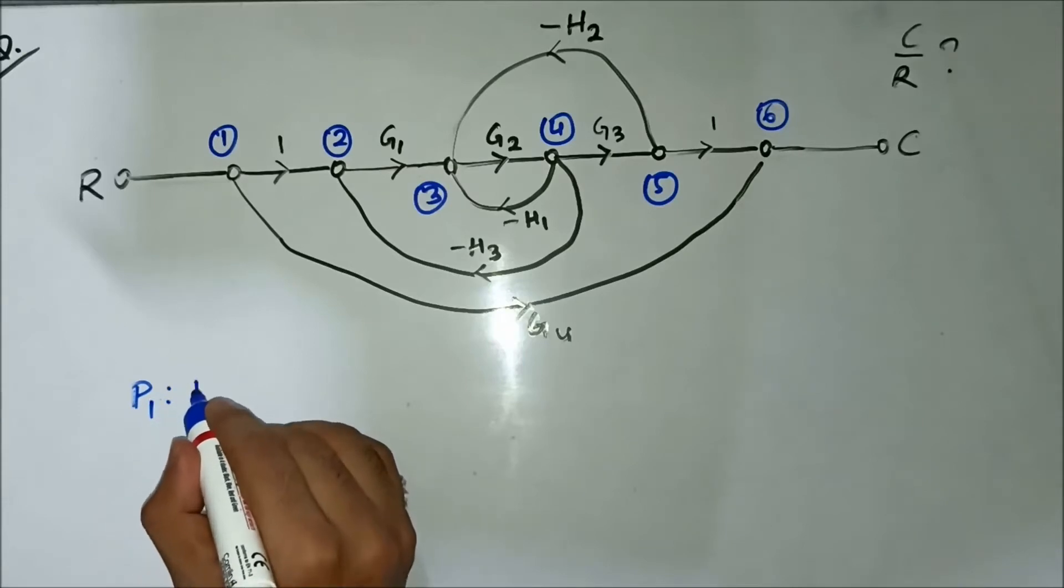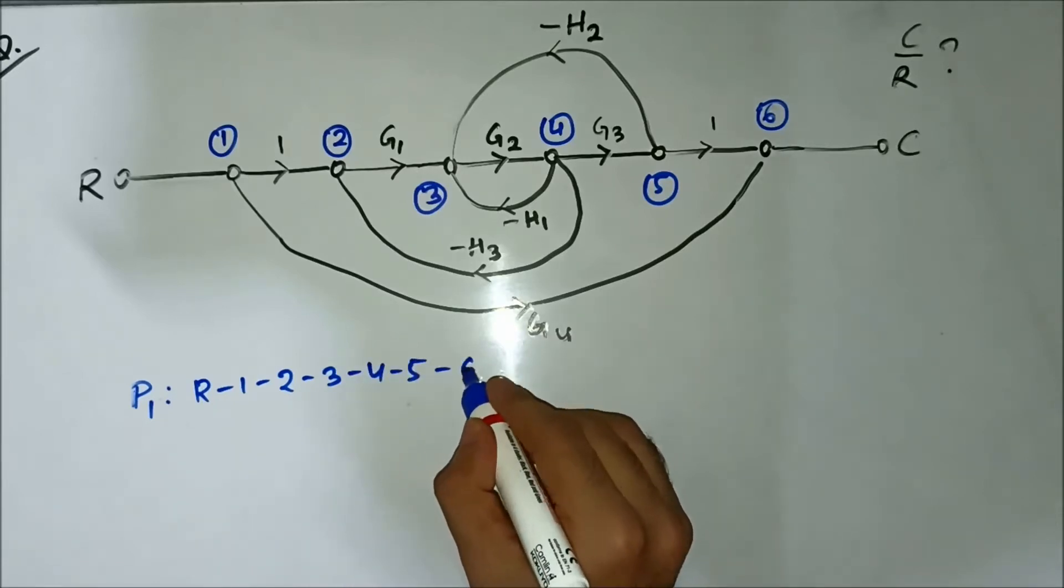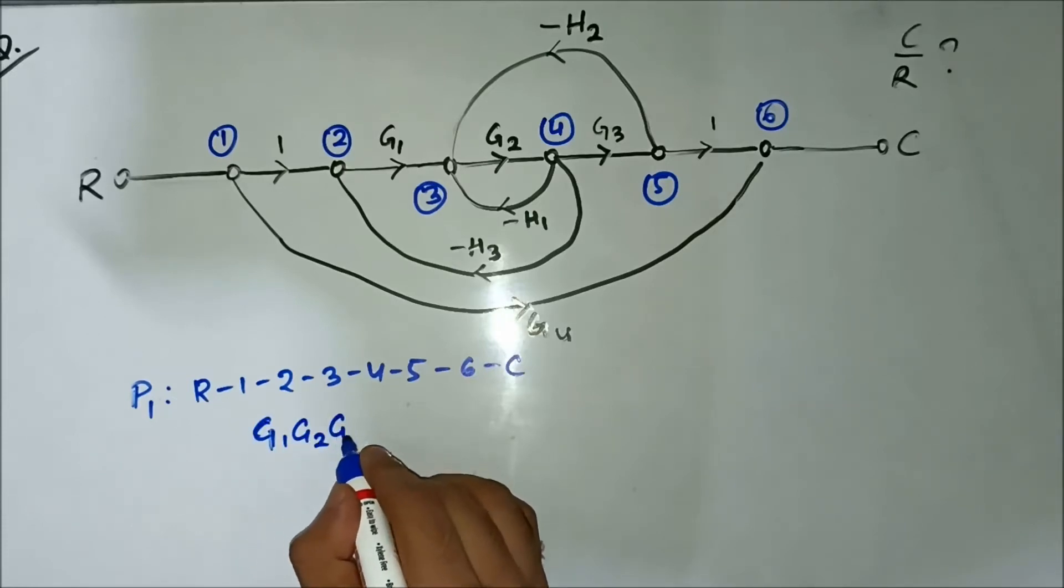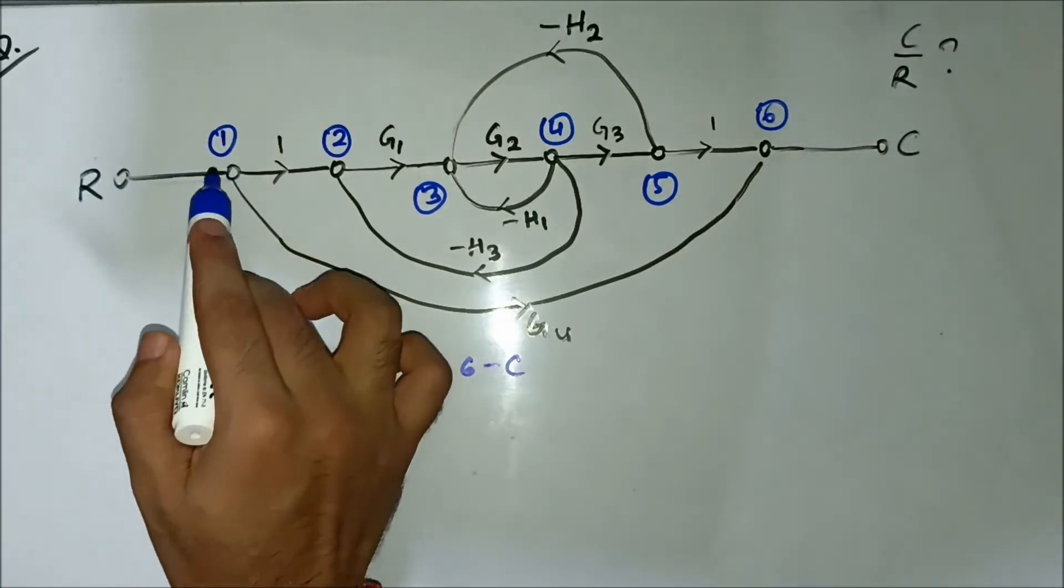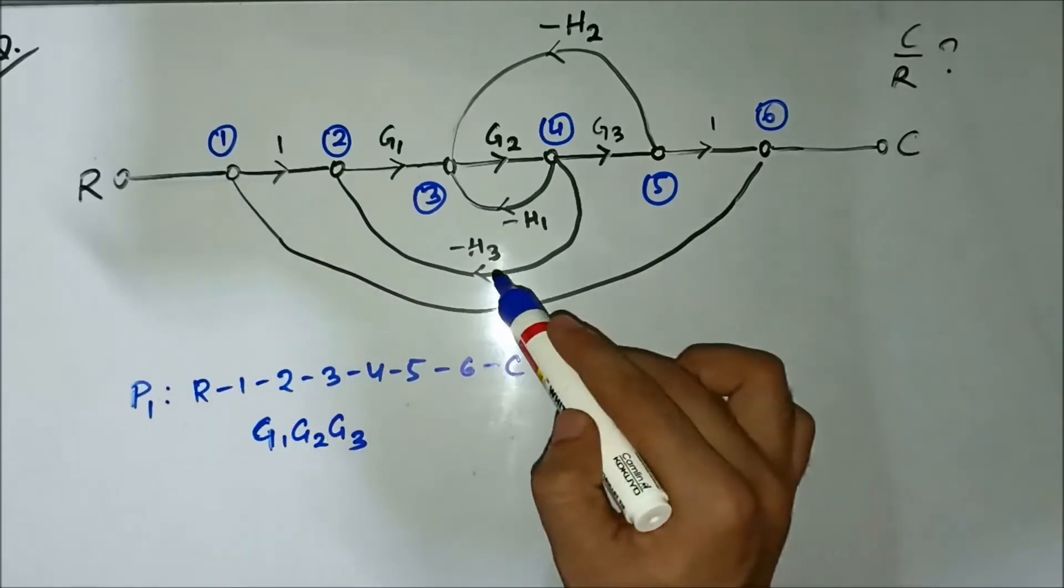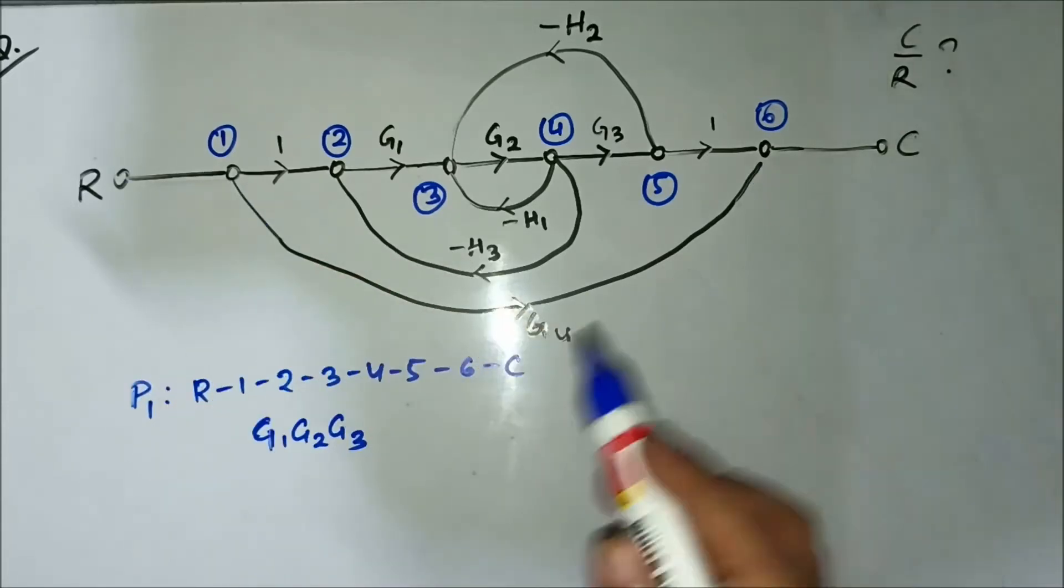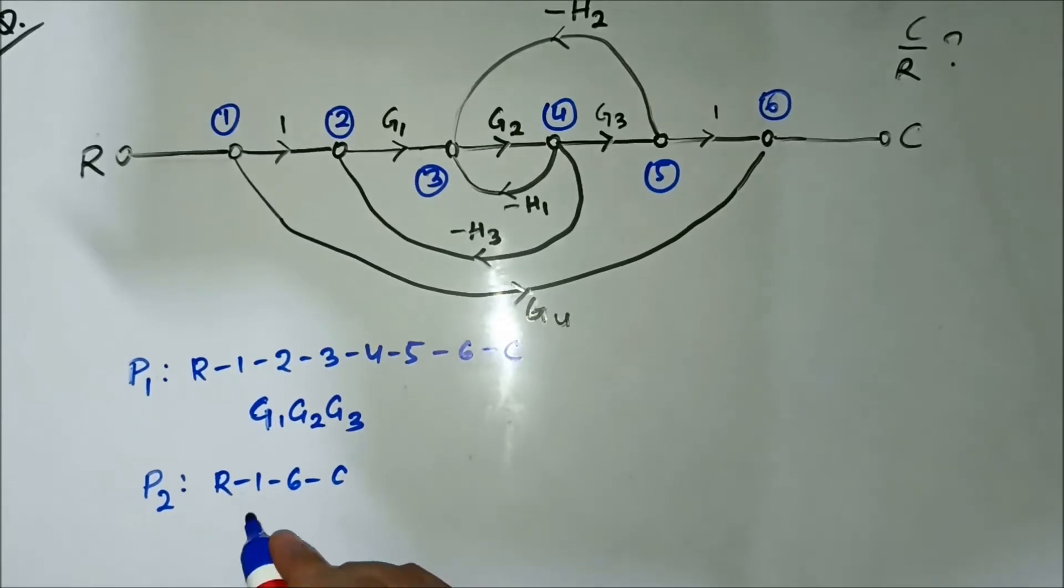The path is R-1-2-3-4-5-6-C and the gain is g1·g2·g3. Then we have another forward path from R to 1, then 1 directly to 6 through this forward directed arrow, this branch g4: R to 1 to 6 then to C. So P2, the forward path R-1-6-C, and the gain is simply g4.